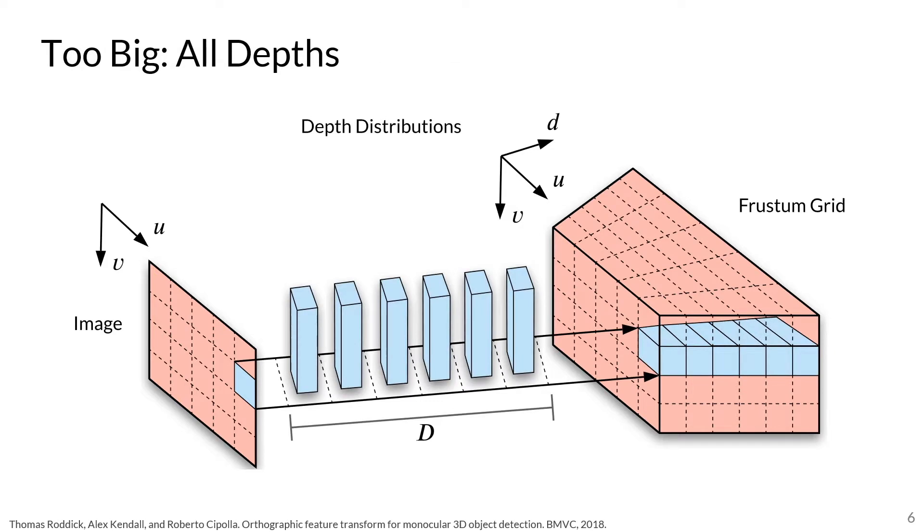Let's start with the too-big approach. Here, methods project each pixel to all possible depths. The issue with this is somewhat obvious. Image information is repeated along the projection ray, which increases the difficulty in locating objects in the 3D representation.